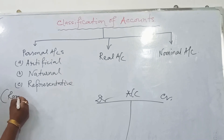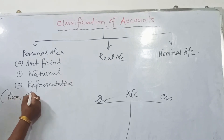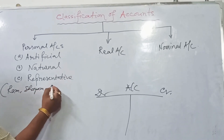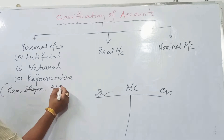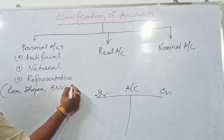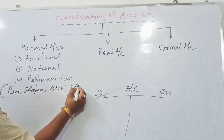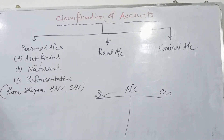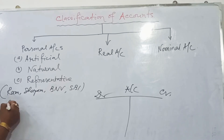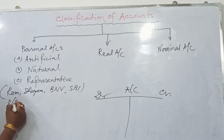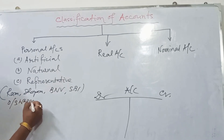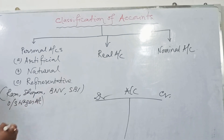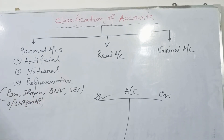For example, Ram account, Sam account, VNV, Bholananda, Asal Vidala account, SBI account are examples of personal accounts. Outstanding wages account is also a personal account.